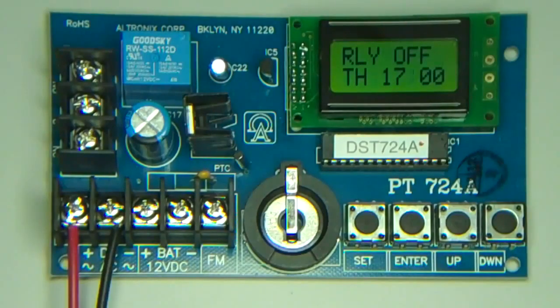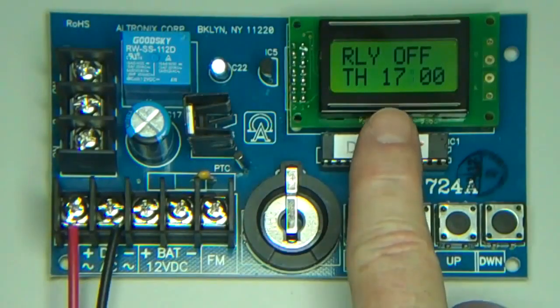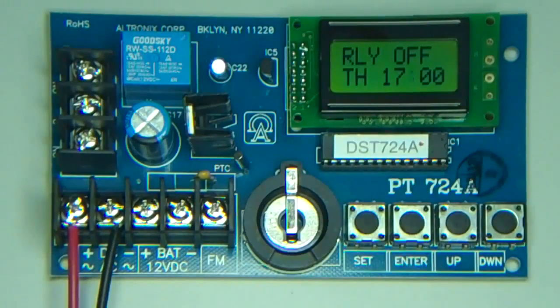And there we have the relay off. That's how you block event program the PT724 timer. Visit us online at jlmwholesale.com.